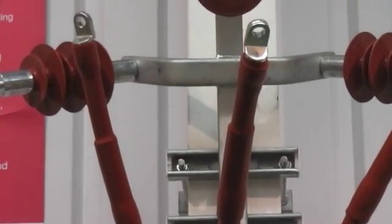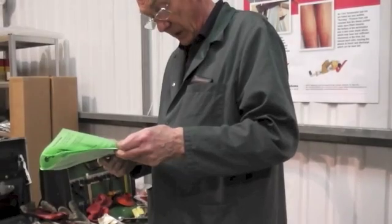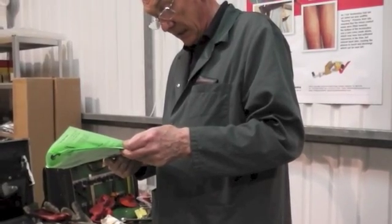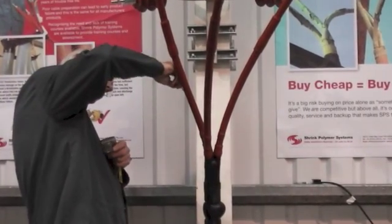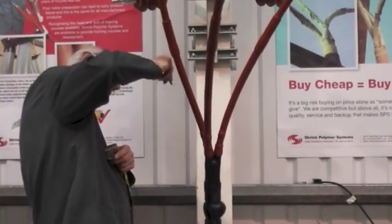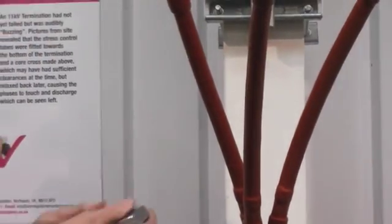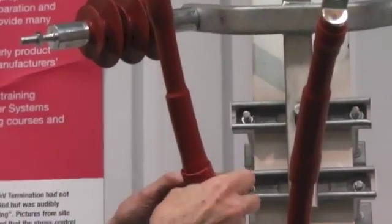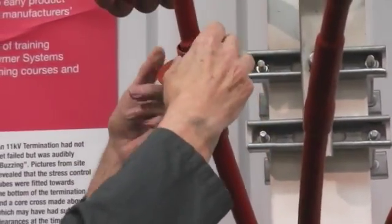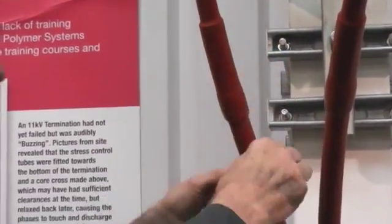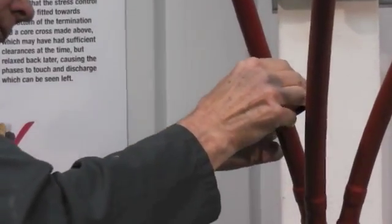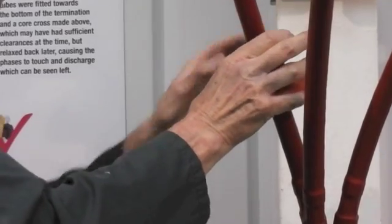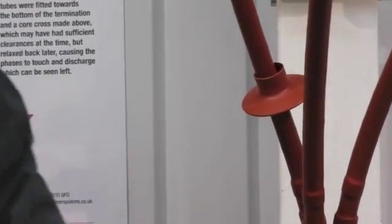And now, depending on voltage class, we're going to fit rain sheds on each of the cores. For 7.2kV, there'll be one. For 12kV, there'll be two. 17.5kV, also two. Three on 24kV, and four on 36kV.